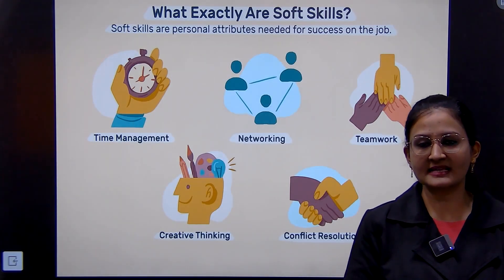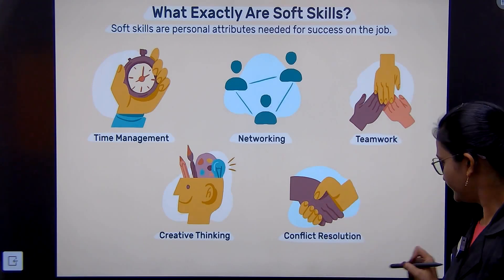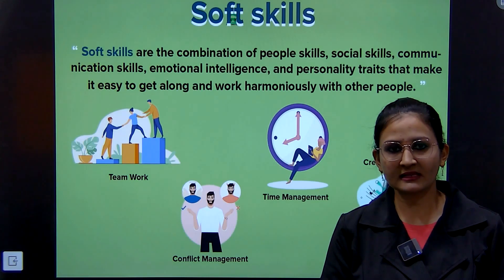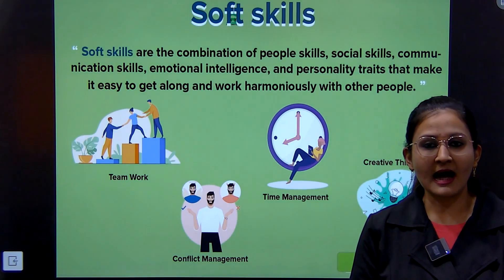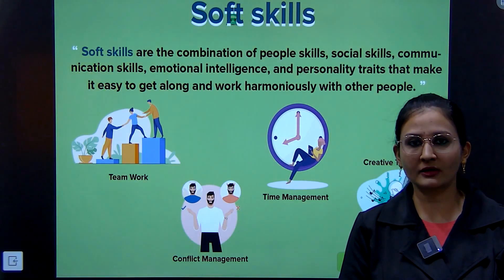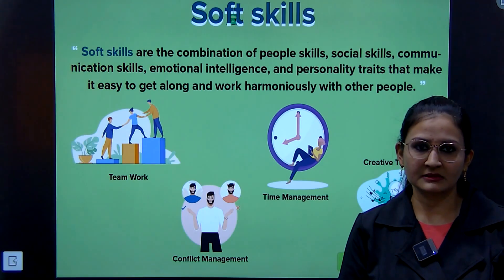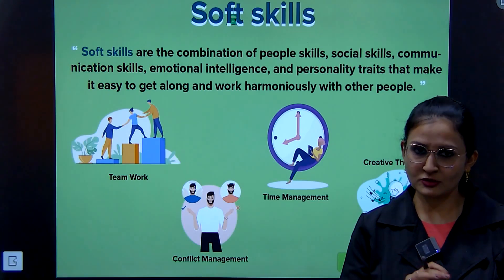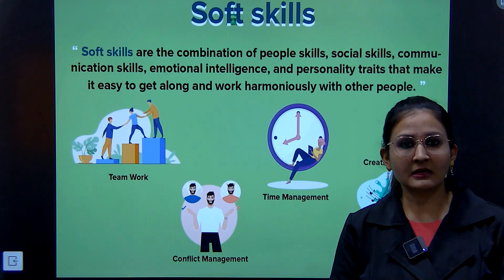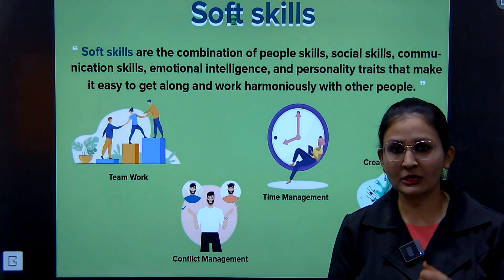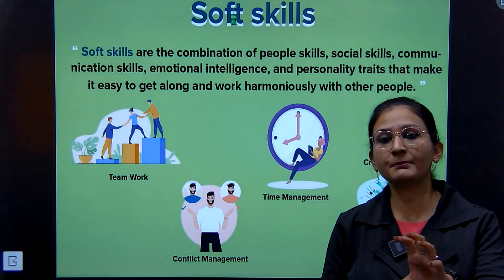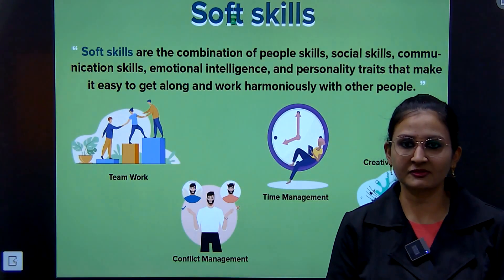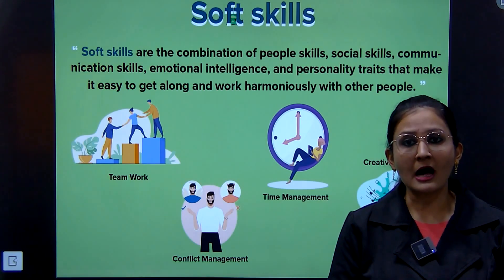Soft skills are the combination of people skills, social skills, communication skills, emotional intelligence, and personal traits that make it easy to get along and work harmoniously with other people. People skills means your inner attributes and inner qualities; social skills means how you interact with other people; communication skills refers to the language you are using; emotional intelligence is how you behave in a given situation; and personal traits includes your body language, communication, eye contact, etc.